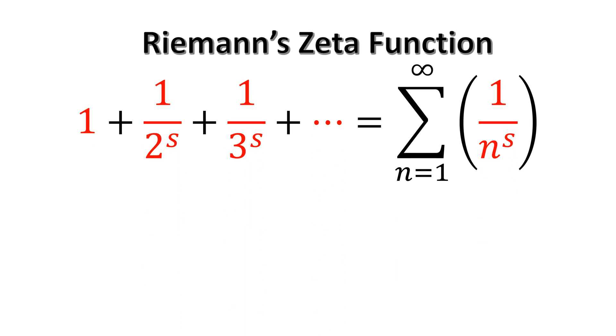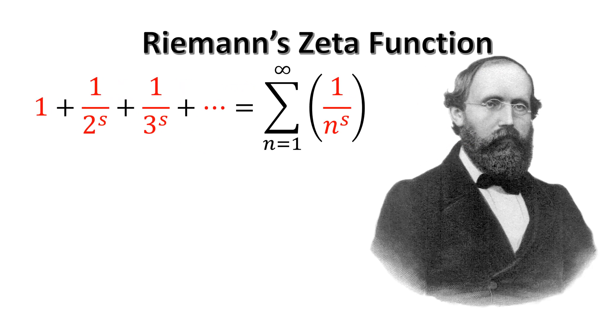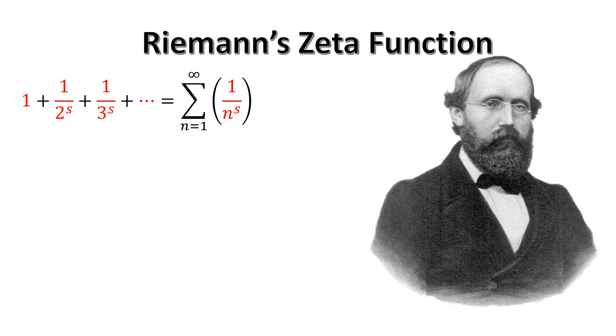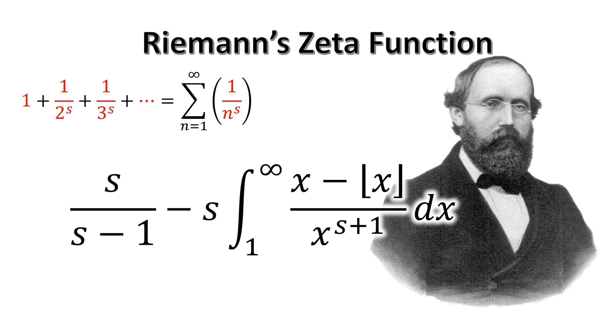This is Riemann's zeta function, which equals infinity in the critical strip. Riemann proved an amazing one-to-one correspondence between this famous sum and this function.